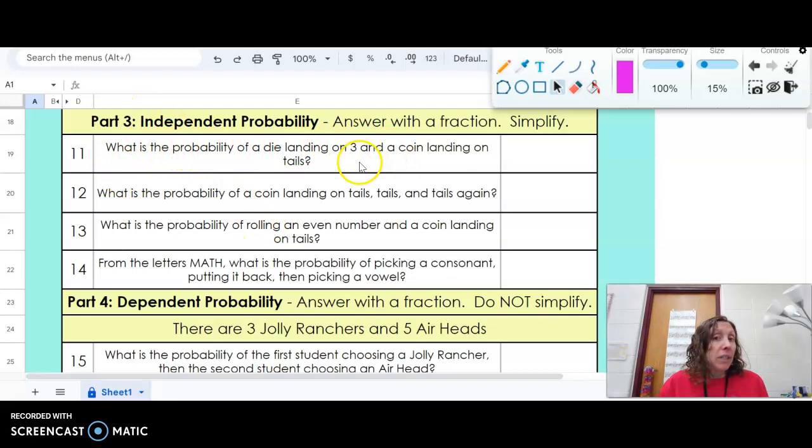What is the probability of a die landing on three? Let's just stop there. Getting the number three when you roll a die would be one sixth. Then having a coin landing on tails. Coin has two sides, and one of those two sides is tails. So we need to do one sixth times one half. We multiply straight across. On top, one times one is one. And on the bottom, six times two is 12. So one twelfth would be that answer.